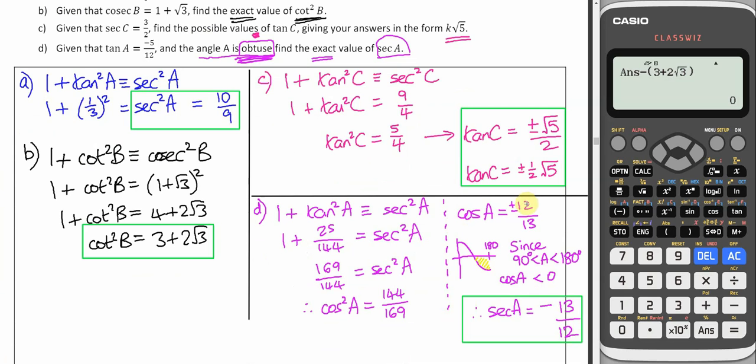So just to quickly summarize what I've done at the end there. I had cos A was either positive or negative 12 over 13. Because A is obtuse, then cos A must be negative. So cos A must be negative 12 over 13.